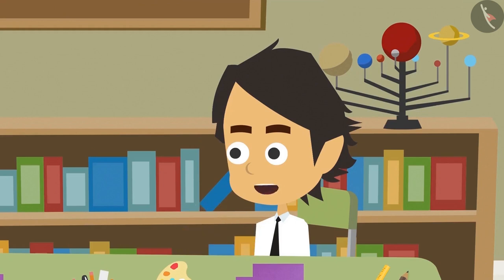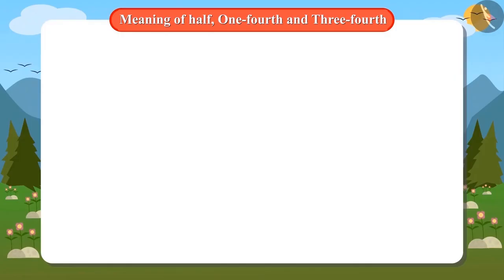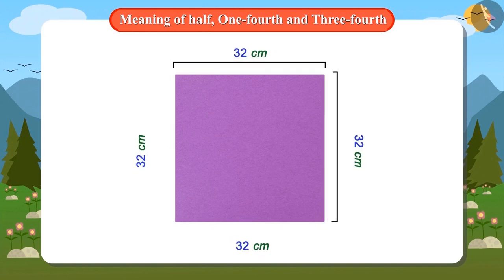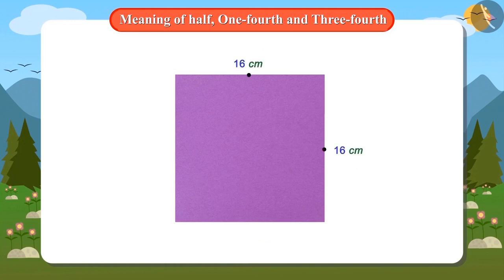Look, one-fourth means half of half. So I first measured this cardboard from all the sides. All the sides are 32 centimetres. Then I marked half on the top and right sides, that is 16 centimetres. After that, I marked half of the half, that is 8 centimetres. In this way, I came to know that both sides of the quarter of the cardboard would measure 8 centimetres. So I cut a piece of cardboard of 8 centimetres length and width and gave it to you.